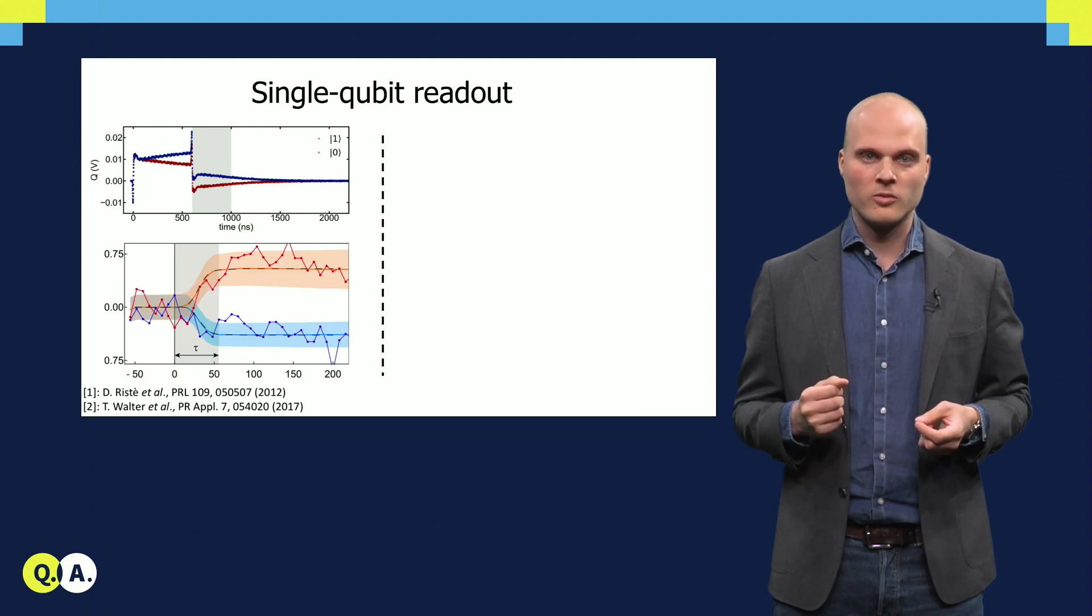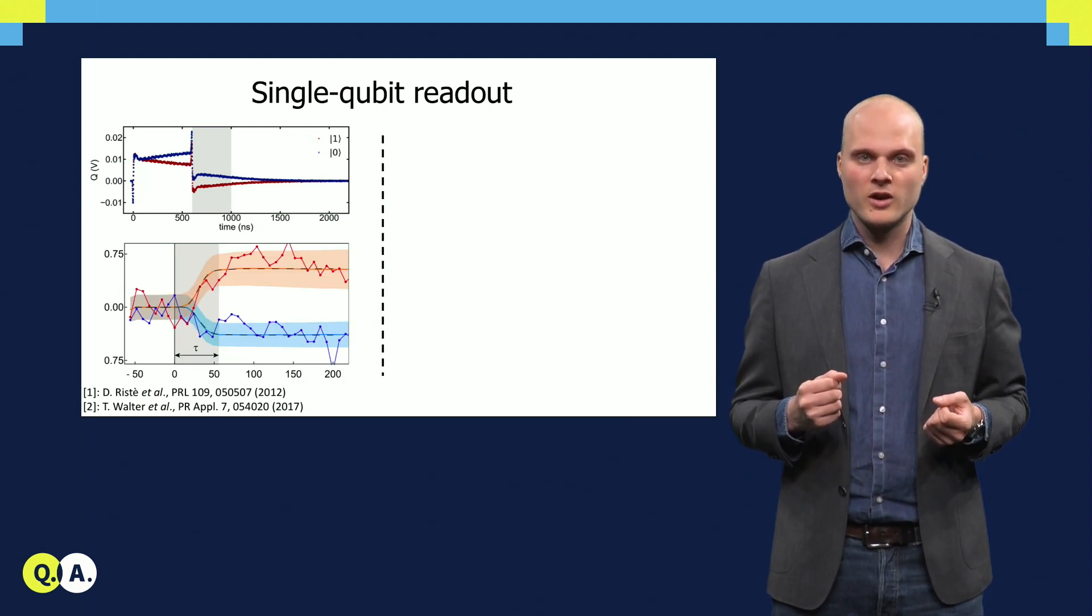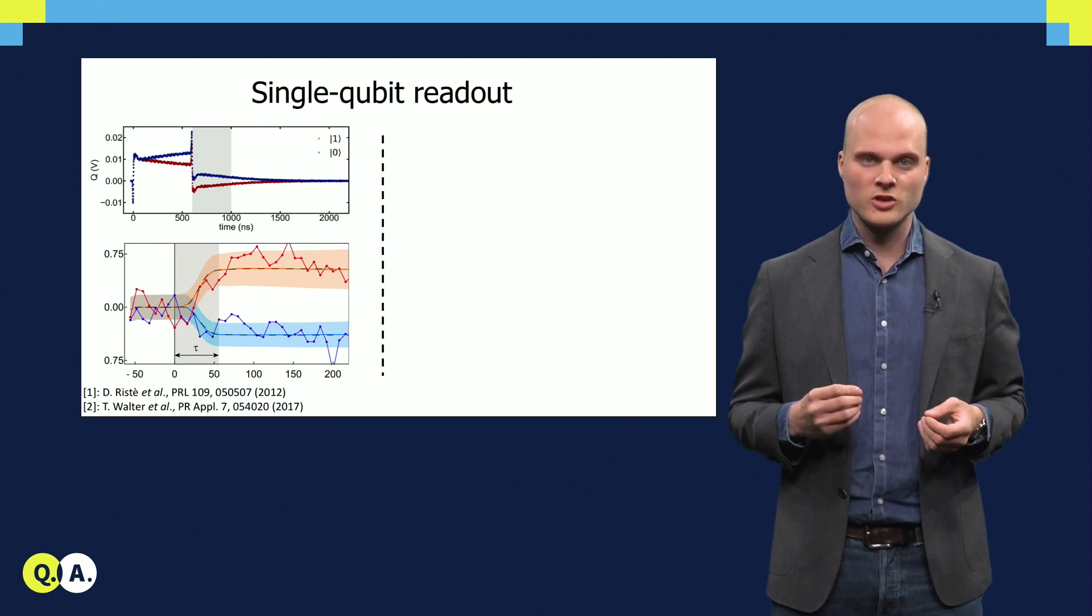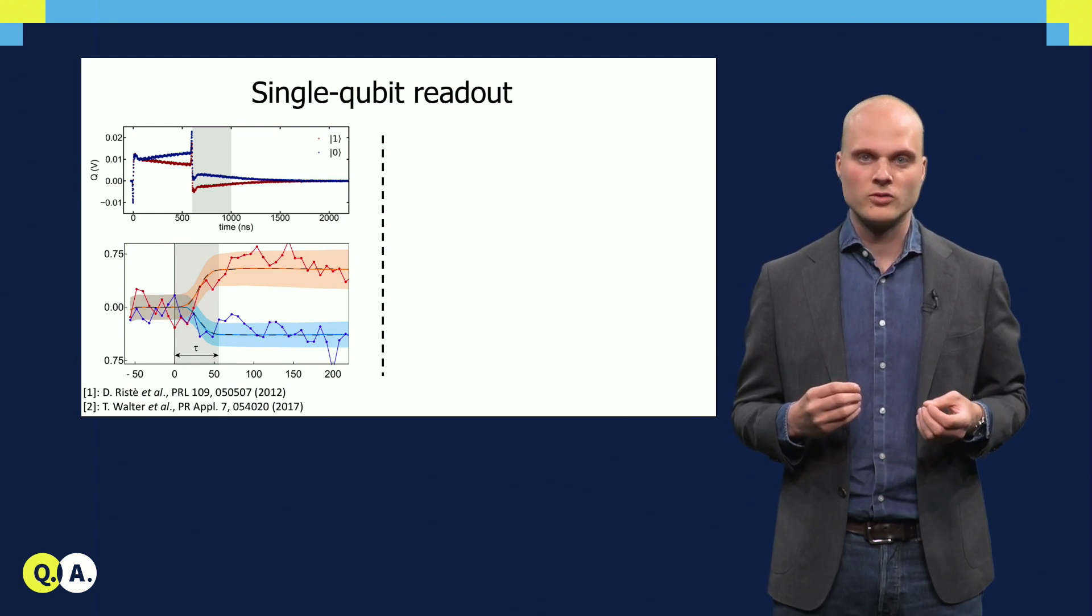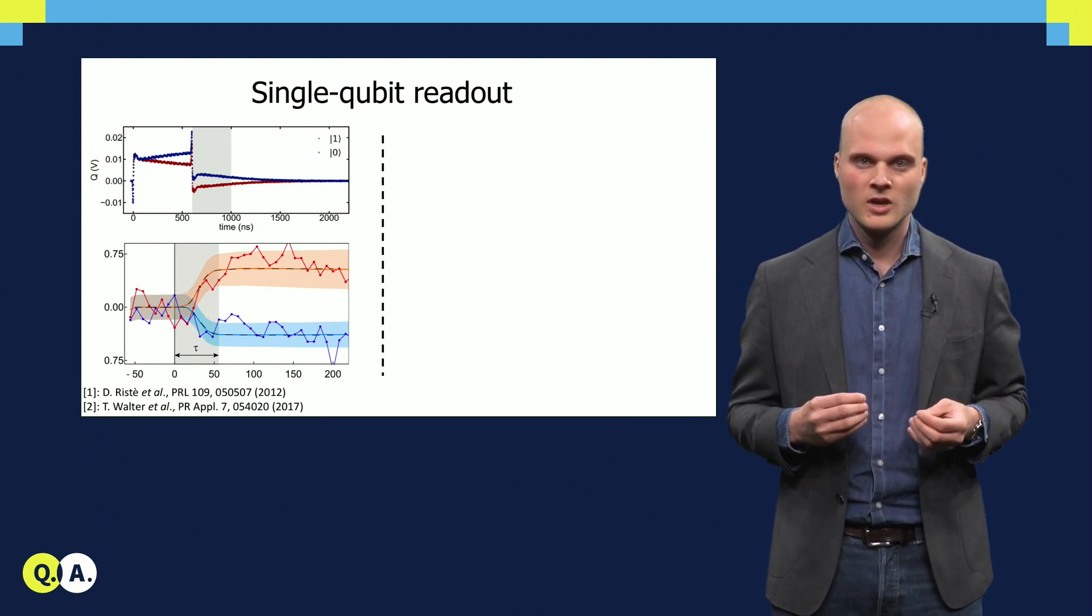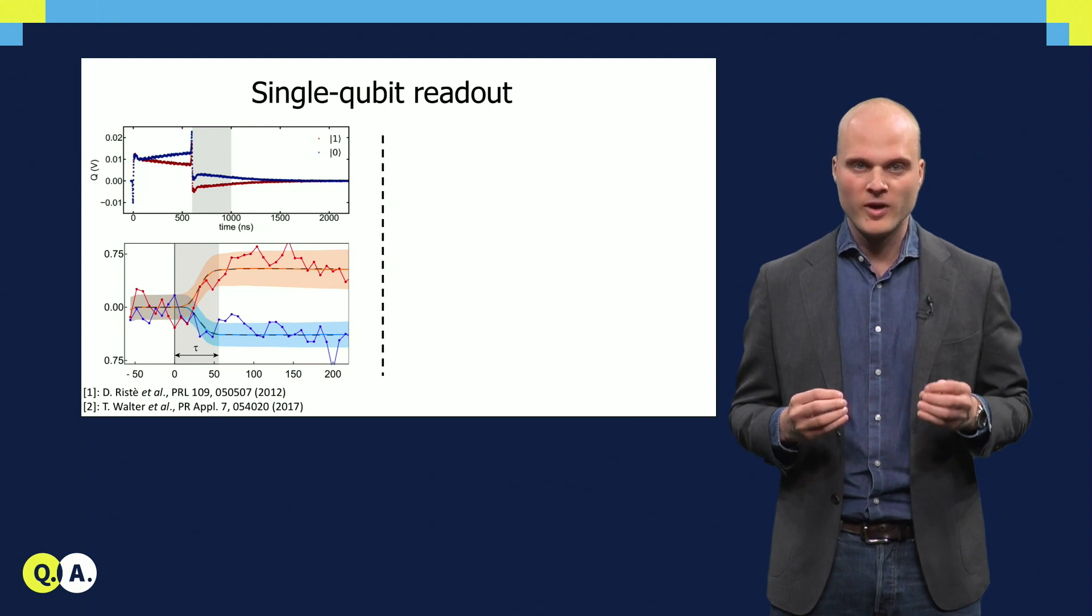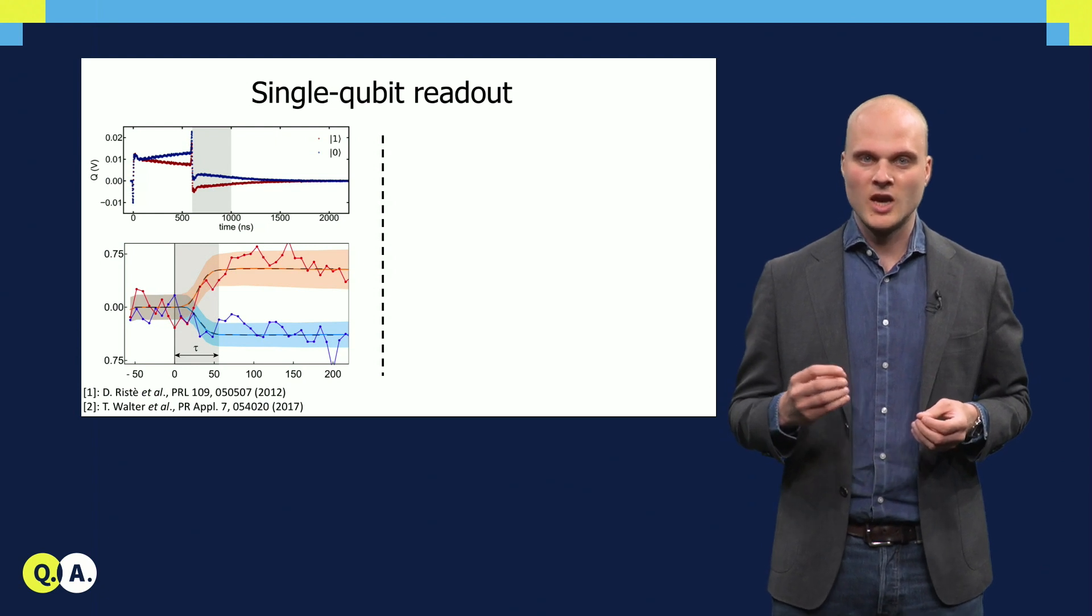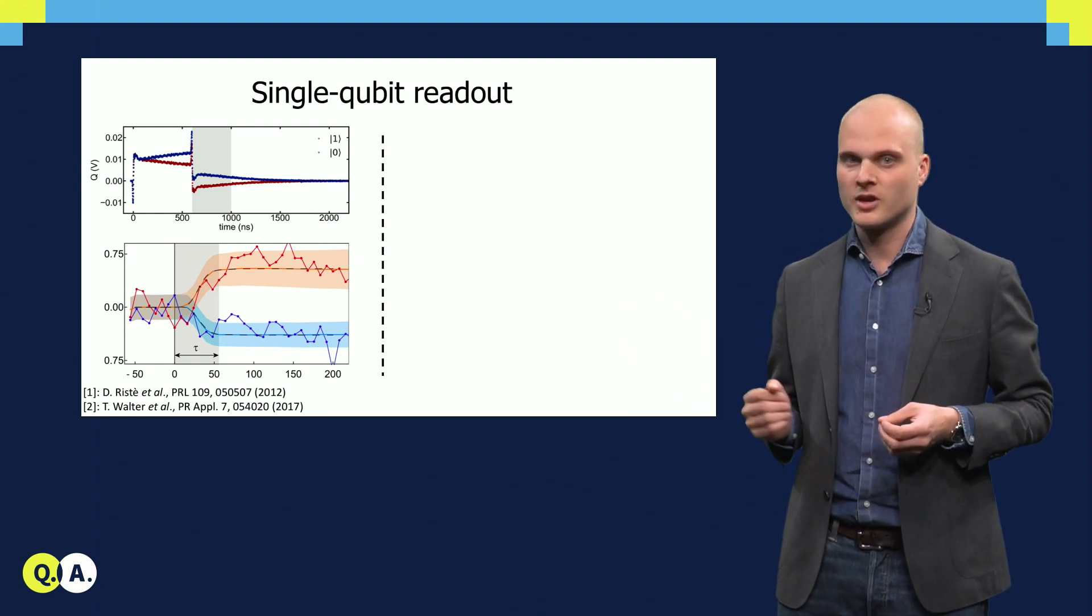But to avoid disturbing our precious quantum system, we can only use readout pulses that consist of a couple of photons. At these power levels, in the order of just a few femtowatts, we are struggling to distinguish the different quantum states, as the signal is hampered by quantum noise, as depicted here.